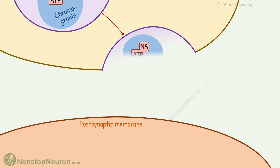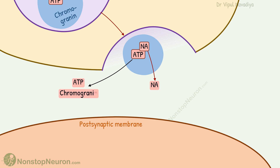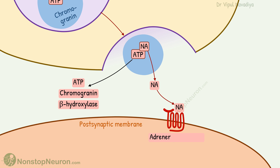When the neuron is stimulated by an impulse, the vesicles release all their contents. Along with noradrenaline, the ATP, chromogranin, and even the dopamine beta-hydroxylase enzyme are released. The noradrenaline then acts on adrenergic receptors on the post-synaptic cell and initiates the response.